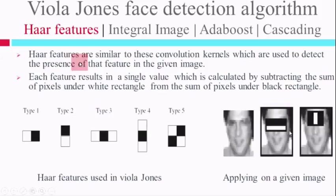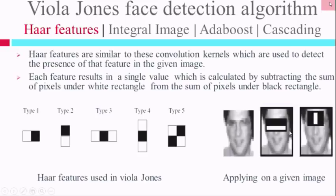So, what are these HAAR features, why do we use them, and what do they signify? Let's say you have this feature — it resembles the bridge of the nose, where only the bridge is brighter and the surrounding is darker. This feature will be able to extract the nose bridge from the image by applying it all over the image. I get high values only at the pixels where this pattern matches exactly, meaning this pattern is observed in the picture at those pixels.